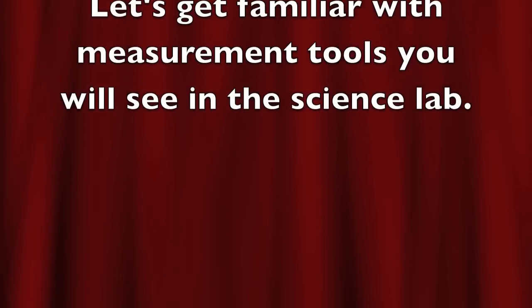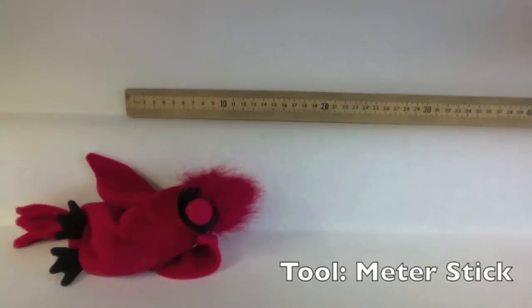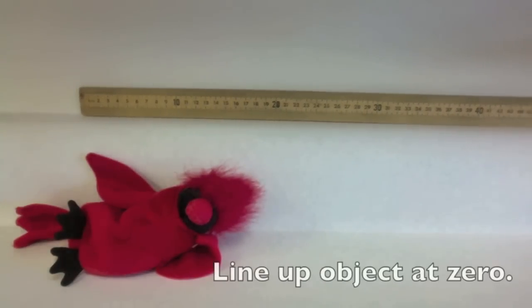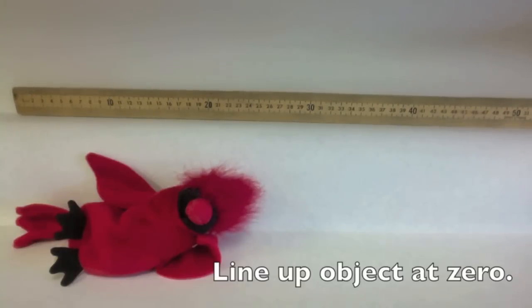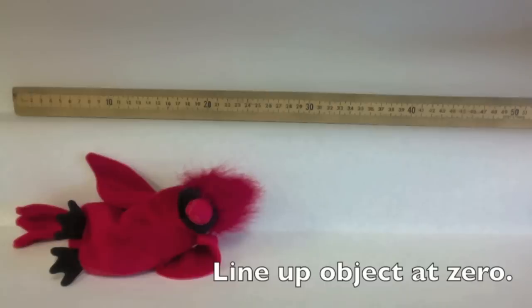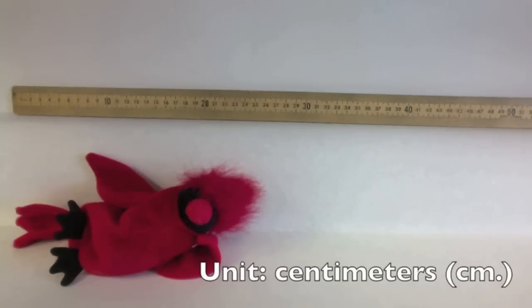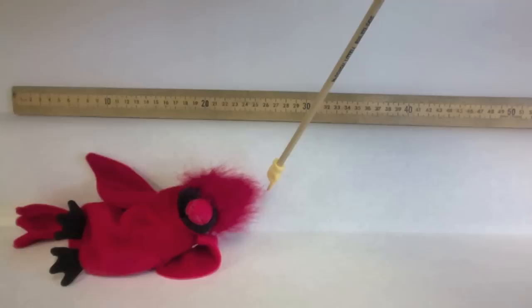Let's get familiar with measurement tools you will see in Science Lab. In Science Lab, one of the tools you'll be using is a meter stick. When using the meter stick, make sure that you're always lining up to start at zero. In Science class, we'll be using the metric system. You always want to make sure that you choose the right units of measure. In this case, we'll be using centimeters. And the bird, in this case, is 26.7 centimeters.